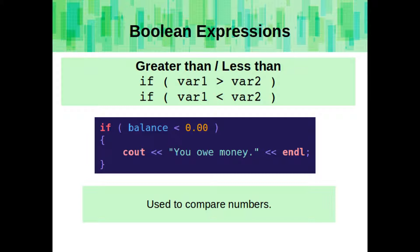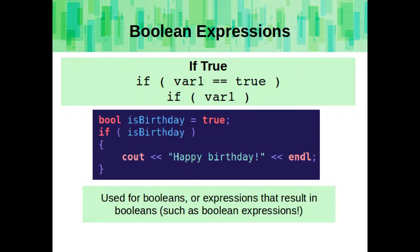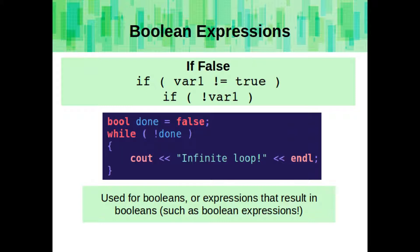We can compare the values of two numbers using greater than, less than, greater than or equal to, or less than or equal to. All of these Boolean expressions result in a true or false, such as if one value is greater than another. A Boolean is already true or false, so if we use an if statement with something whose value is true, it will execute the code block. Otherwise, if the Boolean is false, it would skip over the block. We can also check whether something is false by adding an exclamation sign before the Boolean.